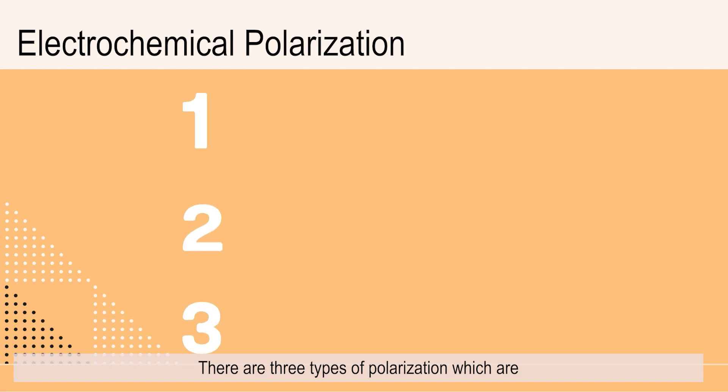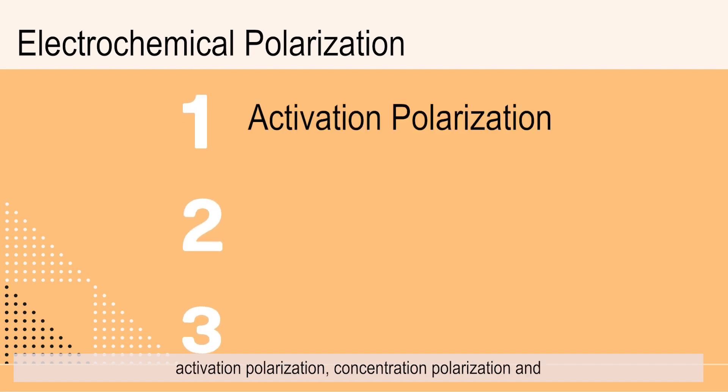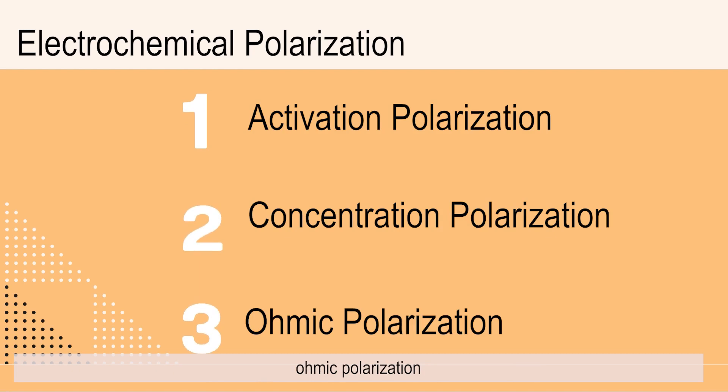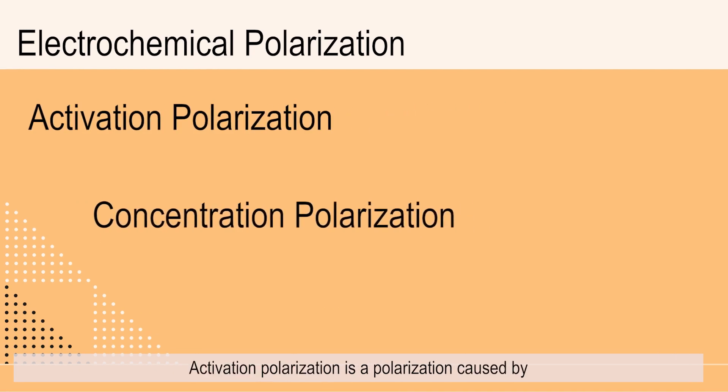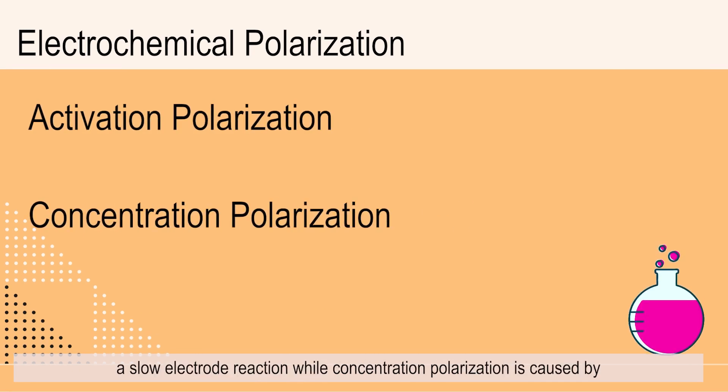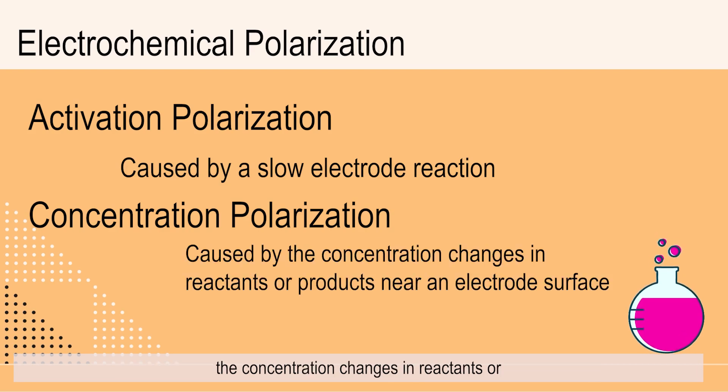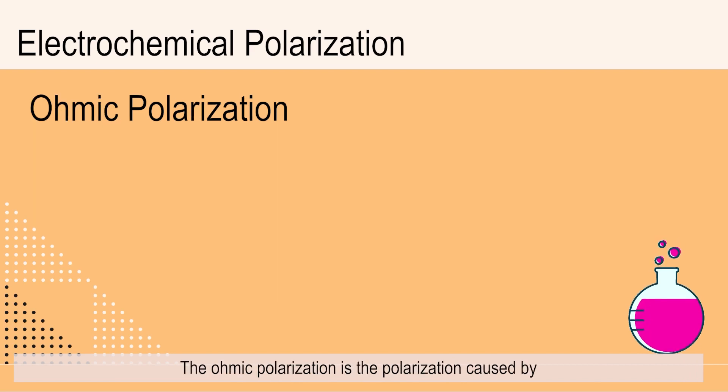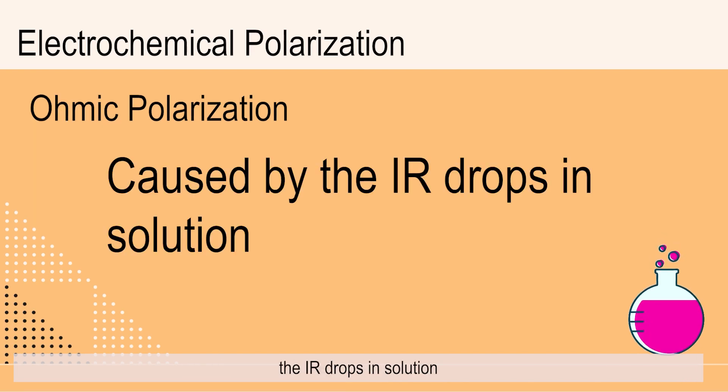There are three types of polarization which are activation polarization, concentration polarization, and ohmic polarization. Activation polarization is caused by a slow electrode reaction, while concentration polarization is caused by the concentration changes in reactants or products near an electrode surface. The ohmic polarization is the polarization caused by the IR drops in solution.